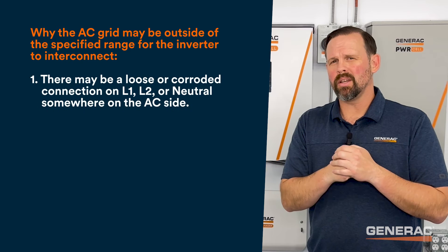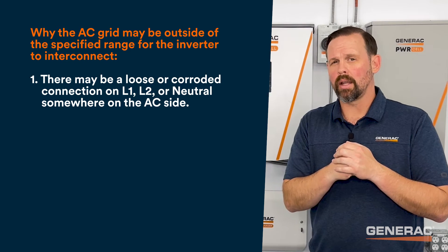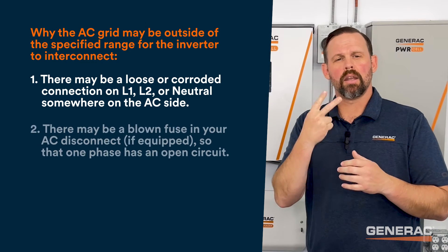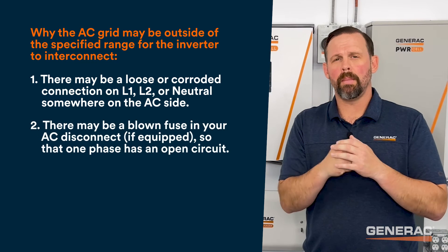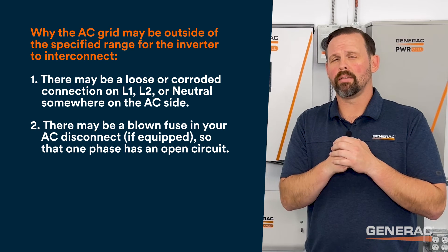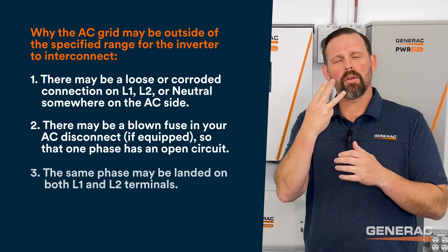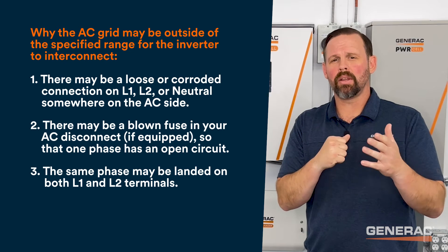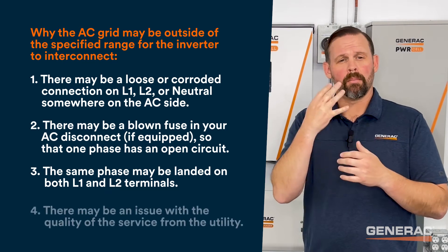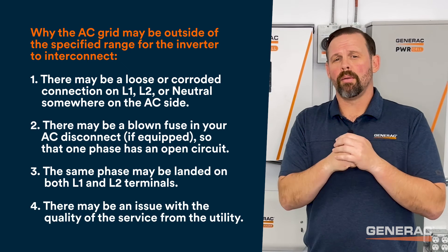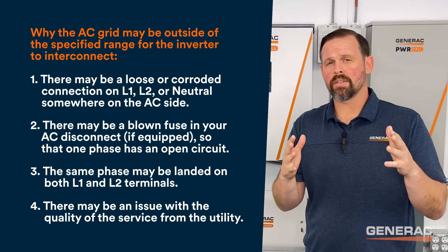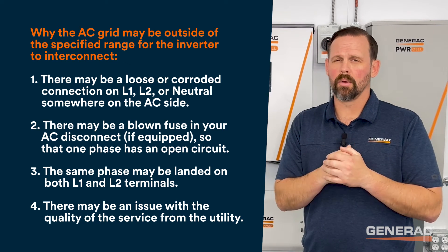Number one, there may be a loose or corroded connection on line 1, line 2, or neutral somewhere on the AC side. Number two, there may be a blown fuse in your AC disconnect if equipped, so that one phase has an open circuit. Number three, the same phase may be landed on both line 1 and line 2 terminals at the inverter. Number four, there may be an issue with the quality of service from the utility. In all cases, the first place to start is with your multimeter.